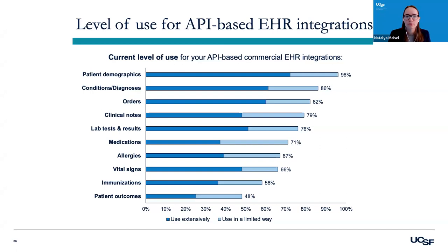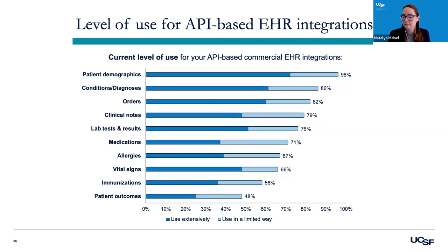This graph shows the level of use for specific data types — patient demographics is the most common at almost 100% of companies using it extensively or in a limited way. Next, we have conditions and diagnoses, then orders, then clinical notes, and then lab tests and results — all of those with over 75% using them extensively or in a limited way.